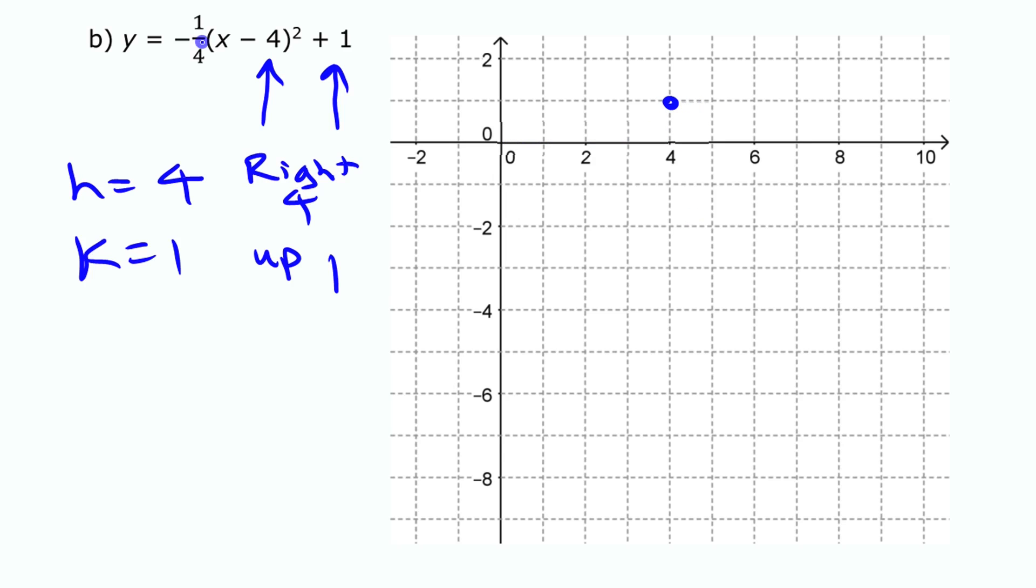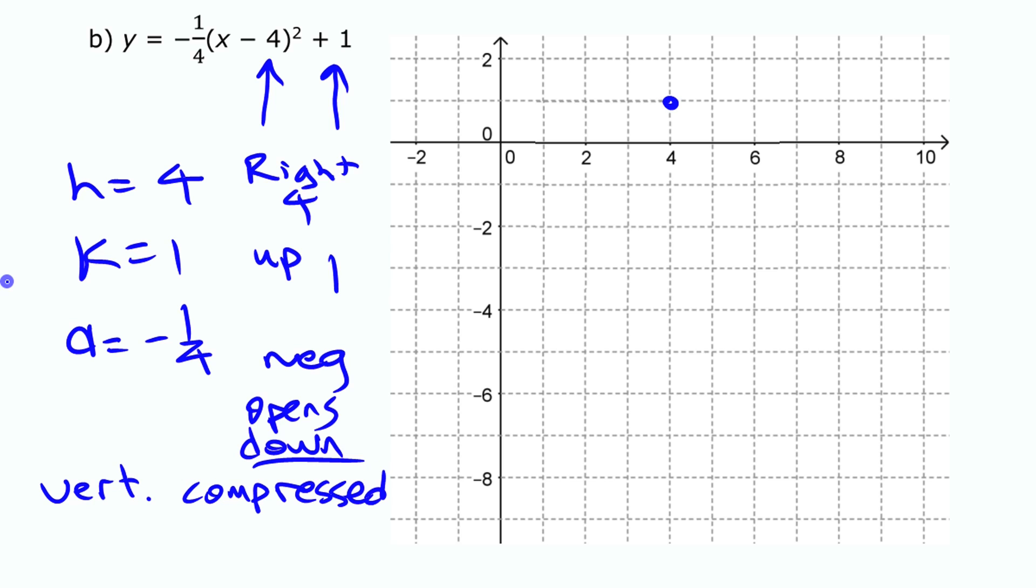And then you can look at the value of a there. A is negative 1 quarter. The fact that that's negative 1 quarter. It's negative means it opens down. And the fact that it is 1 quarter, it means it is going to be vertically compressed by a factor of 1 quarter.